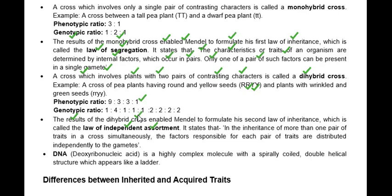The law of independent assortment states that in the inheritance of more than one pair of traits simultaneously, the factors responsible for each pair of traits are distributed independently to the gametes. For example, if one character is recessive, the other need not be recessive — they are independent. Like eye color and hair color: if my eye color is brown, it does not determine the hair color. One character and the other character independently exhibit their traits.